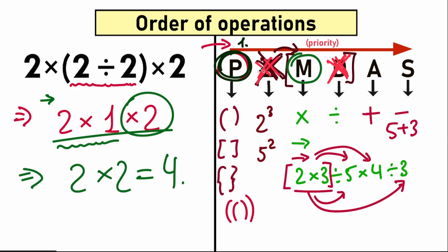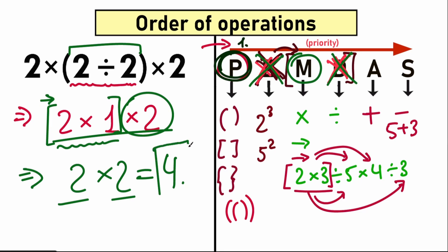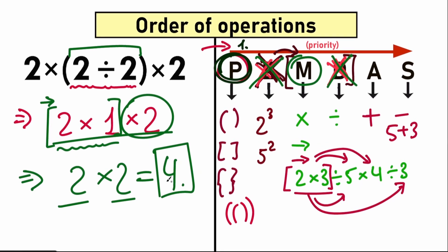Let's make a quick assessment. Step one: evaluate the expression inside parentheses — 2 divided by 2 equals 1. Step two: check for exponents — none, reject. Step three: multiplication/division mixture — we have 2 times 1 times 2, performed left to right: 2 times 1 equals 2, then 2 times 2 equals 4. According to PEMDAS, the correct answer is 4. Just keep that in mind: 4 is the correct answer.